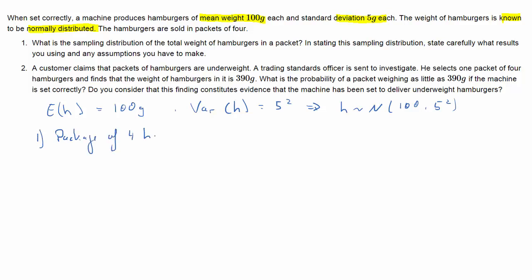We have a package of four hamburgers and we're now asked to derive the sampling distribution, so that's basically the distribution of 4H. We'll call this random variable H_pack, the hamburger weight in a pack, and the question is how is this distributed.